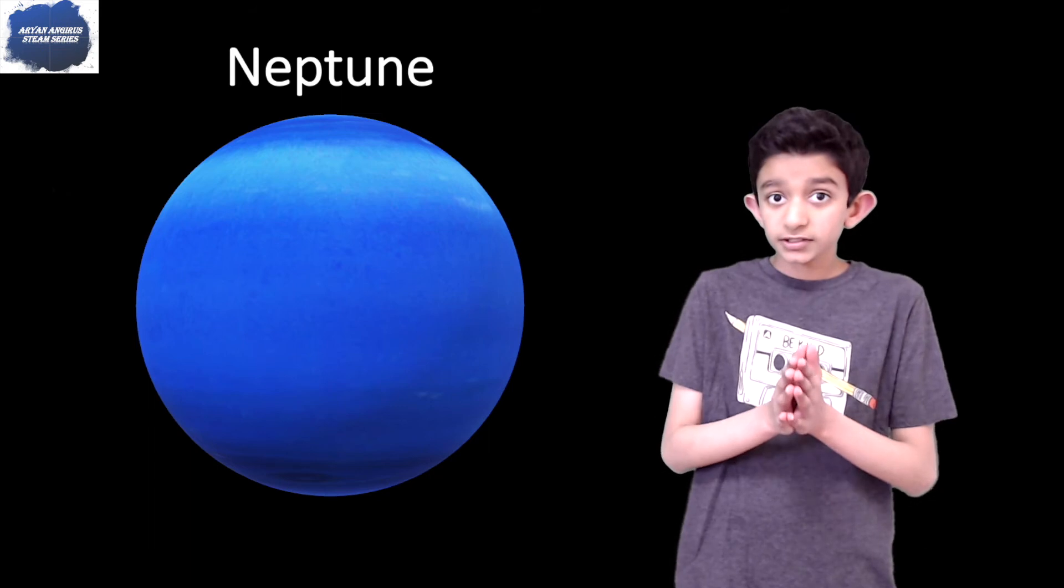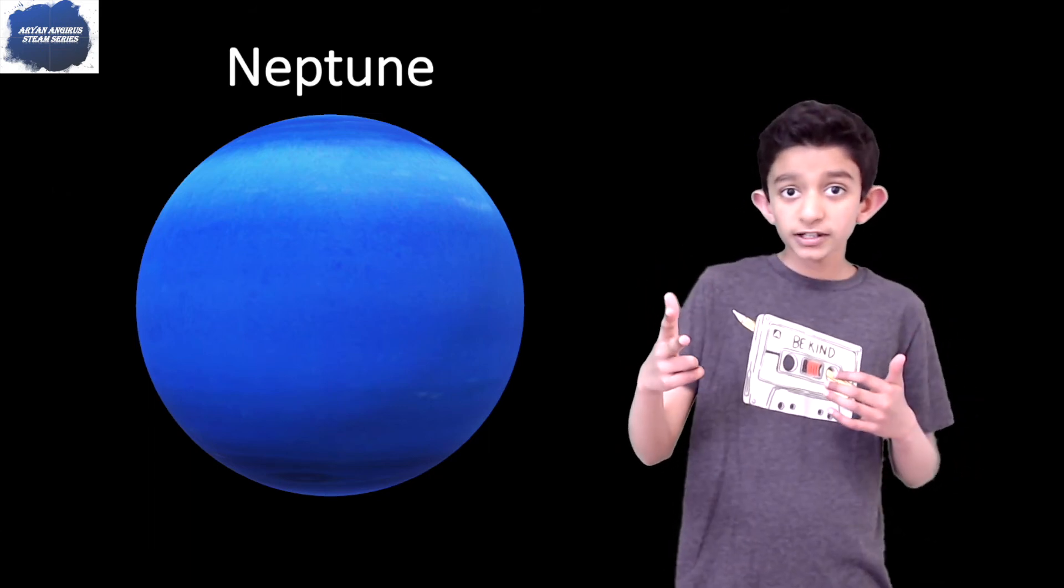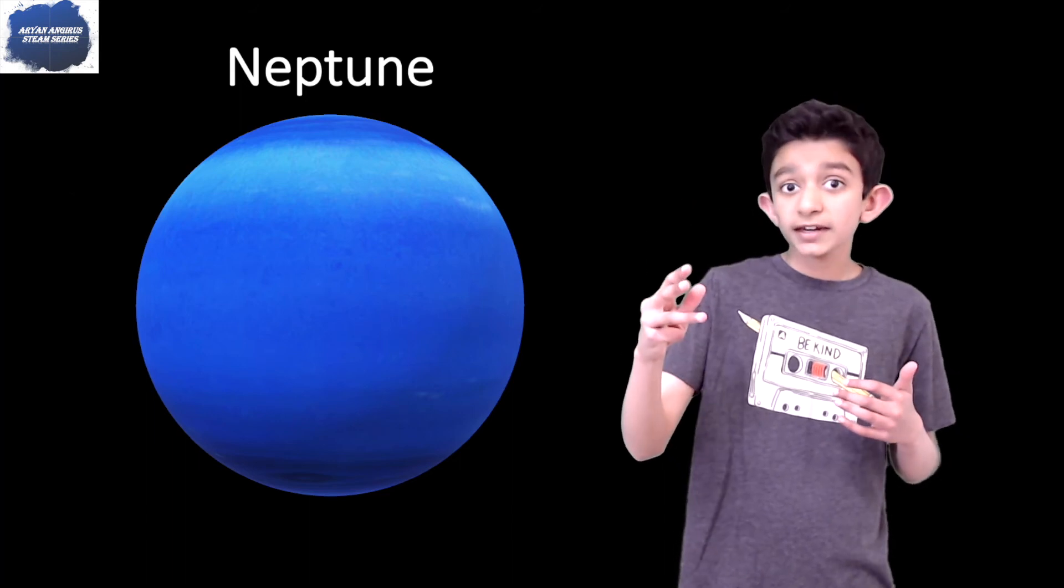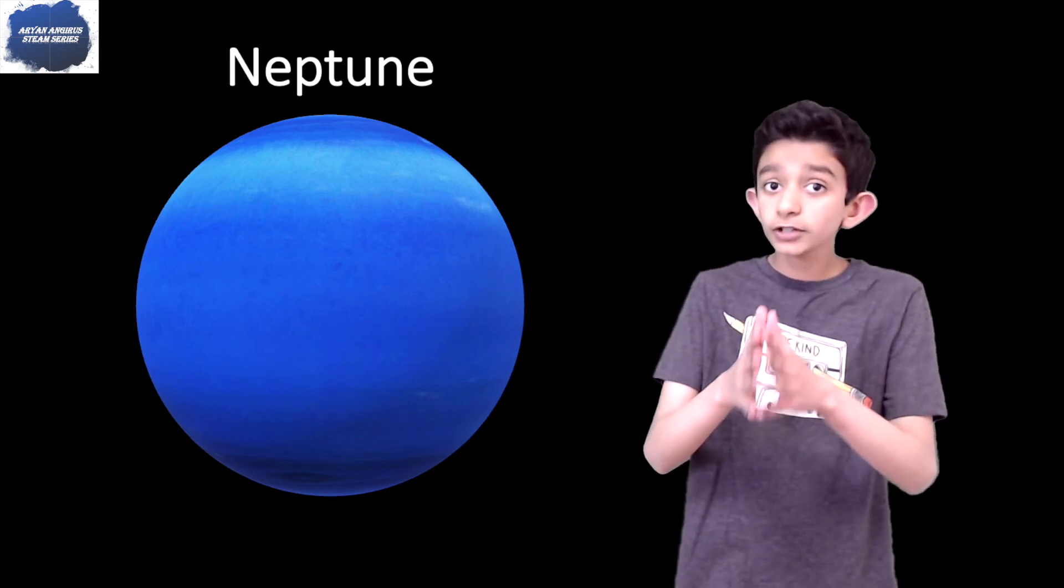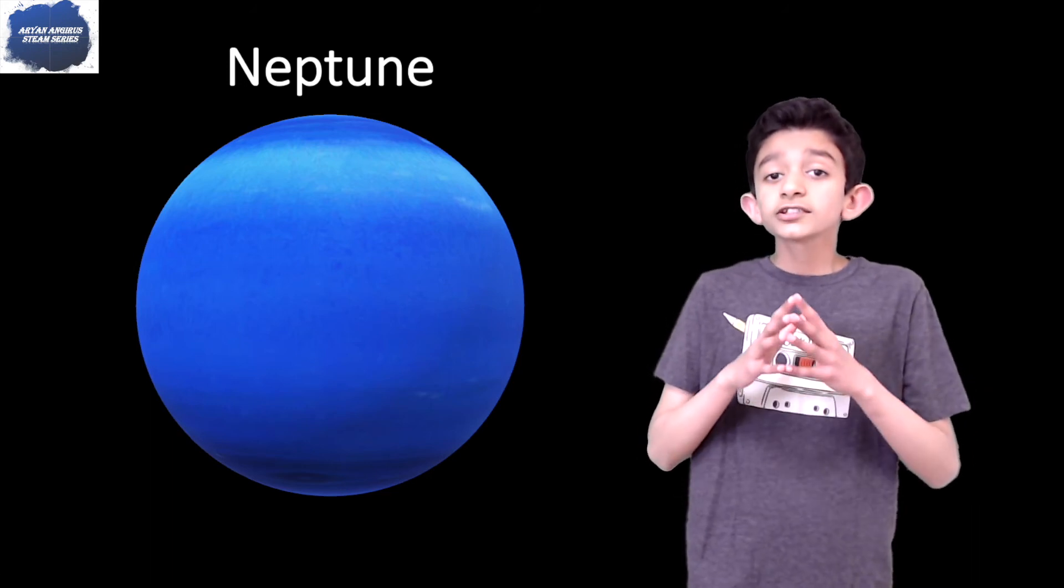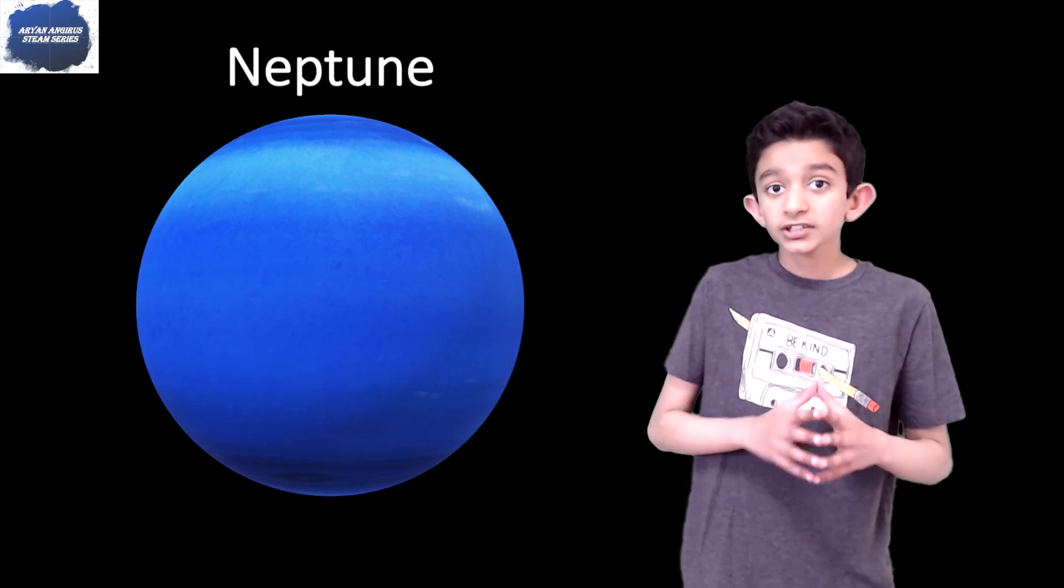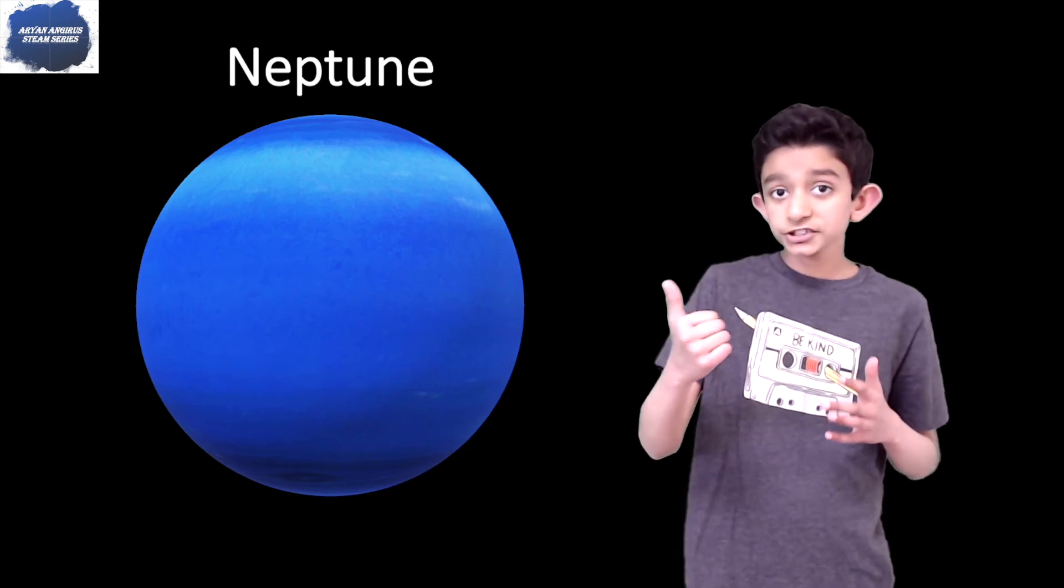Neptune also has the same atmosphere as Uranus. It has thick fog of water, ammonia, and methane—that's what gives it the same blue color as Uranus. It also has an Earth-size core, just like the gas giants and Uranus, with hydrogen, helium, and methane in its air.